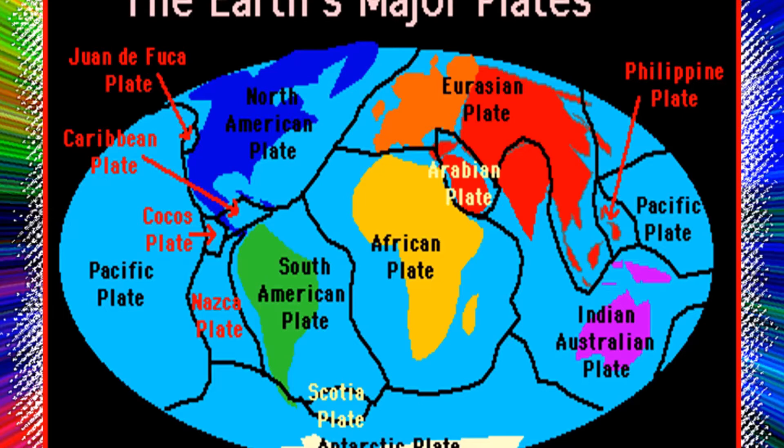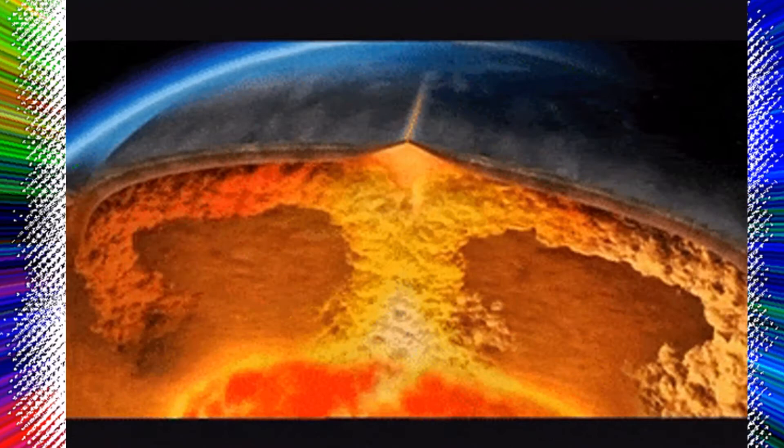Plate motions cause mountains to rise where plates push together, or converge, and continents to fracture and oceans to form where plates pull apart, or diverge. The continents are embedded in the plates and drift passively with them, which over millions of years results in significant changes in Earth's geography.